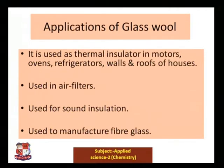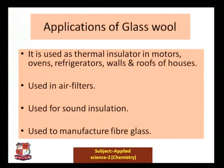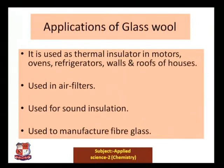Because of these special properties — low density, low thermal and electrical conductivity, fireproof, resistant to chemicals, and good tensile strength — glass wool is used as a thermal insulator in motors, ovens, refrigerators, walls, and roofs of houses. It is also used in air filters, for sound insulation in soundproof cabins, and for manufacturing fiberglass.